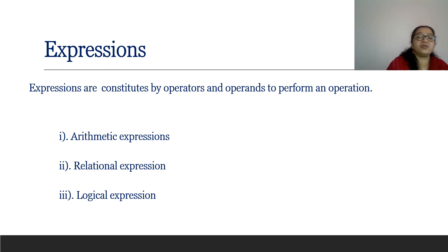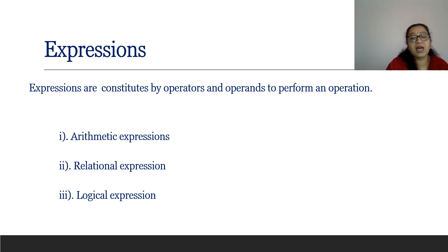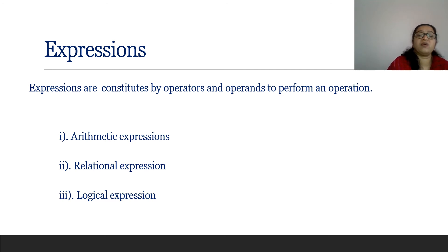Expressions are constituted by operators and operands to perform an operation. There are three types of expressions in C++: arithmetic expressions, relational expressions, and logical expressions. Arithmetic expressions use arithmetical operators; relational expressions use relational operators; and logical expressions use logical operators.